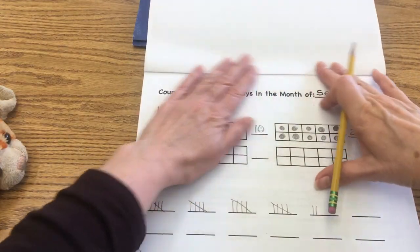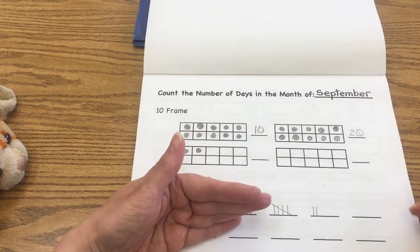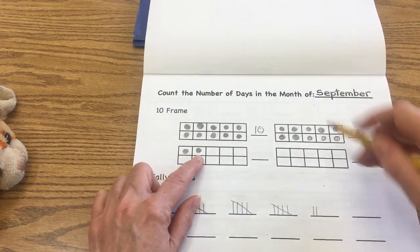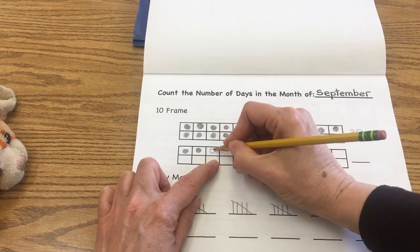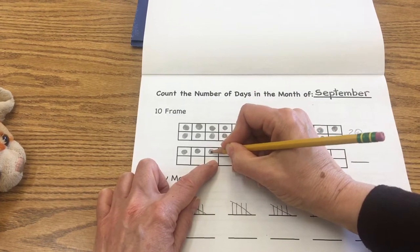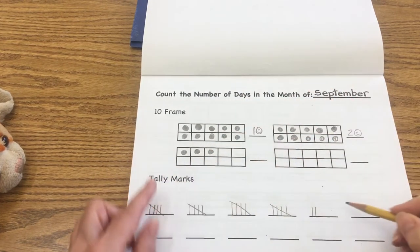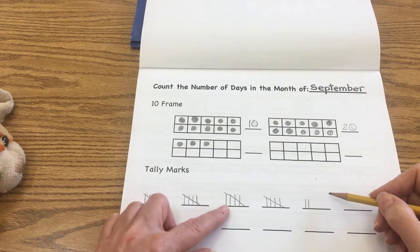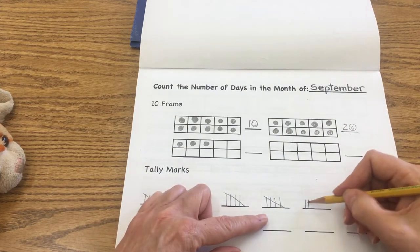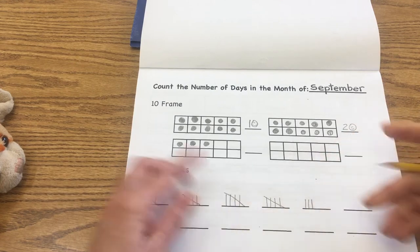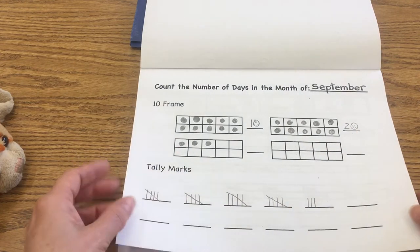Let's make sure we have 23 dots in our 10 frame. So we have 10, 20, 21, 22. We need one more dot to make 23. Let's look at our tally marks. We have 5, 10, 15, 20, 21, 22. We need one more to make 23.